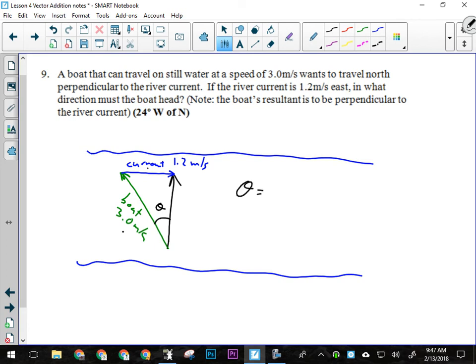So theta will equal sine to the minus one of 1.2, the opposite side, over the hypotenuse, 3.0. So when I do that, I should get 24 degrees west of north or into the current. Since they gave us compass directions, we should say west of north. But that does mean 24 degrees into the current in order to end up going straight across the river.